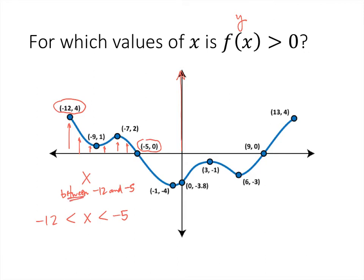Now we also want to include negative 12 itself because at this point negative 12 comma 4, the y really is positive. So we include negative 12 in our inequality. We don't include negative 5 because at this point negative 5 comma 0, the y value is 0. Not greater than 0, it's equal to 0. So we don't include negative 5 for that reason. So this is part of our solution.